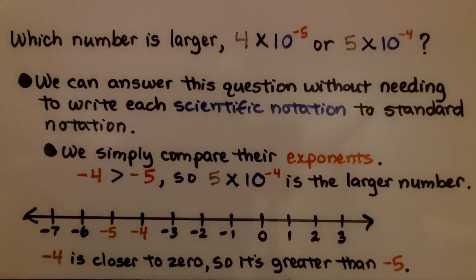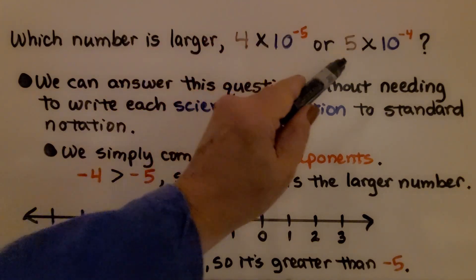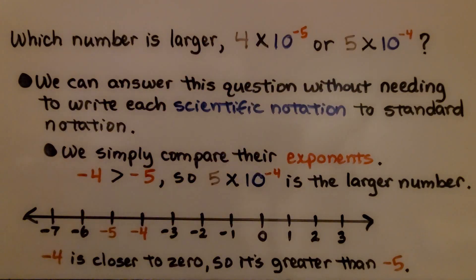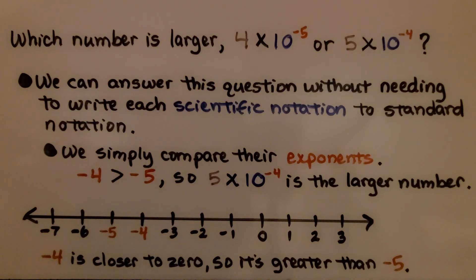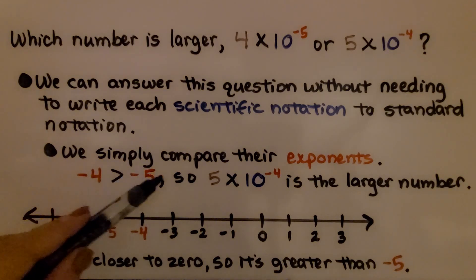Here it's asking us which number is larger: 4 times 10 to the negative 5th power, or 5 times 10 to the negative 4th power? We can answer this without converting to standard notation — we simply compare their exponents. Negative 4 is greater than negative 5.